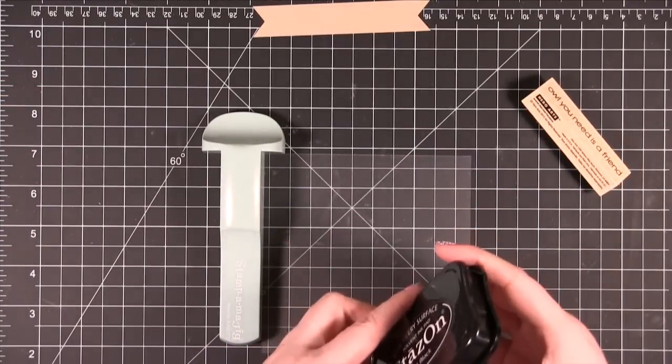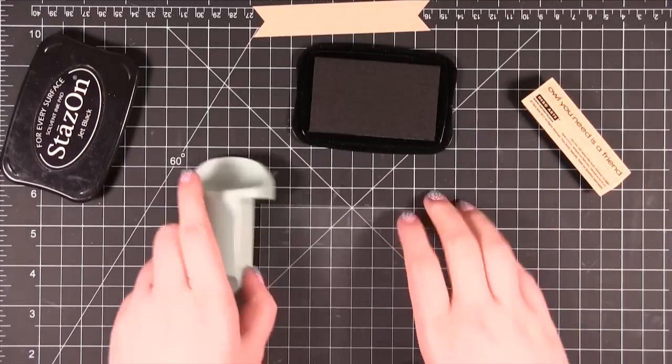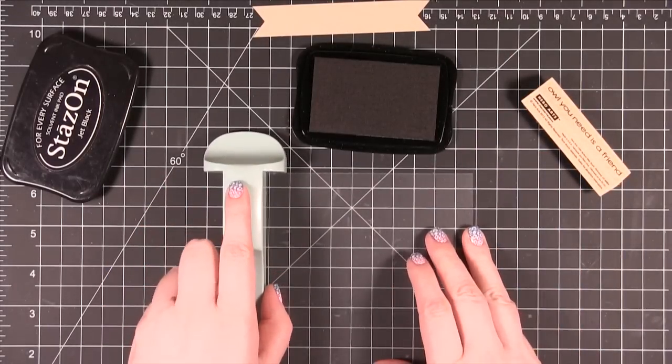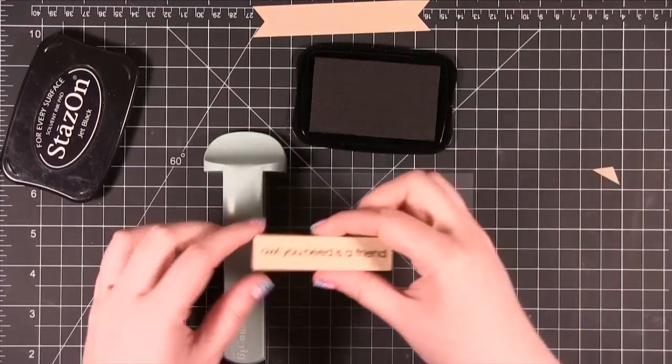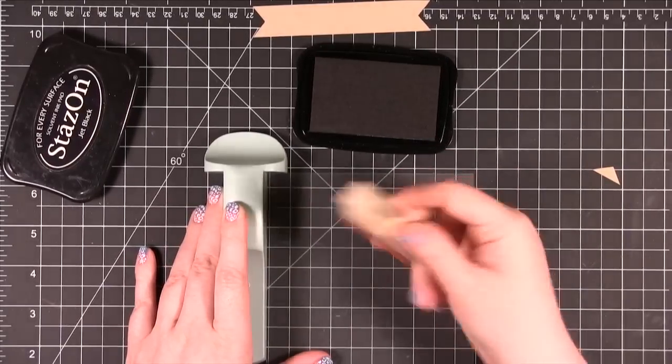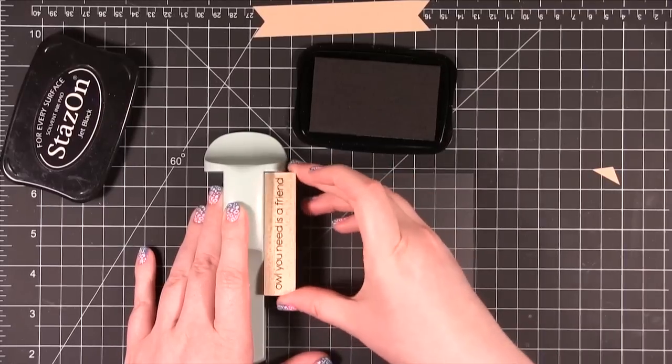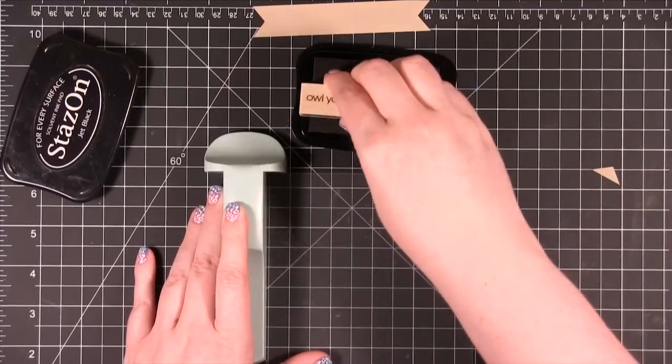And then you're going to take your stamp and sometimes it's actually a little bit easier on these long skinny stamps to have the longest part up against this instead of going like this. It's a little bit more stable to press it in like that. So that's the way I'm going to do it.